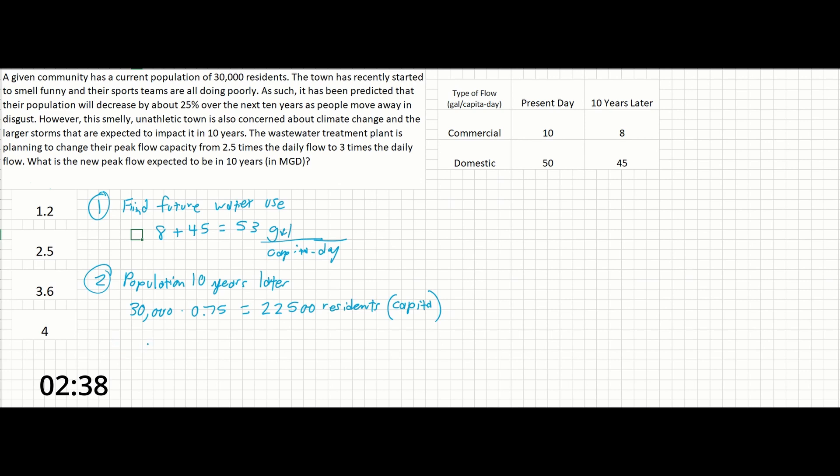Step 3. We're going to find the daily flow rate in 10 years in MGD. So if we have 53 gallons per capita day times 22,500 capita, that's going to give us just about 1,192,500 gallons per day since capita will cancel out.